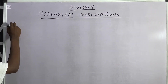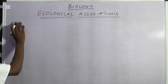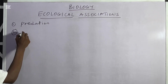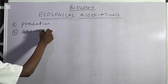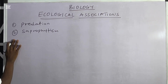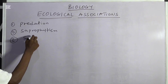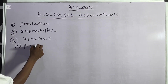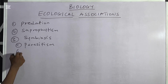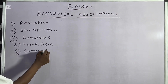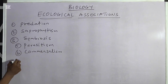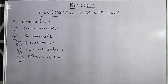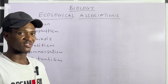We are going to focus on the main ones, which are: one, predation; two, saprophytism; and three, symbiosis. Under symbiosis we have parasitism, commensalism, and mutualism. So these are the three groups or divisions of symbiosis.